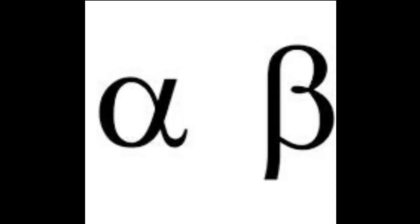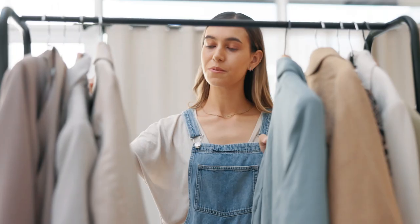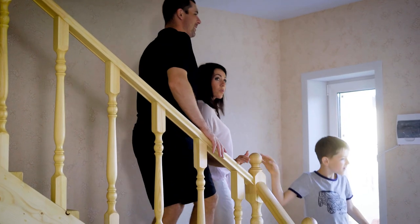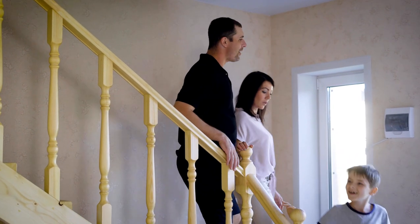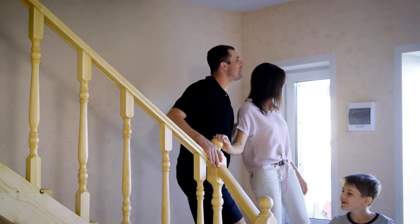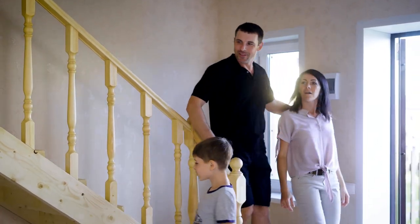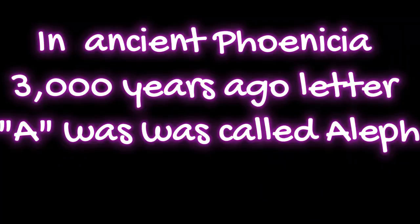Interestingly, the Greek alphabets alpha and beta have a deep relationship to our three basic needs — that is food, clothing, and shelter — what in India we know as roti, kapada, and makan.